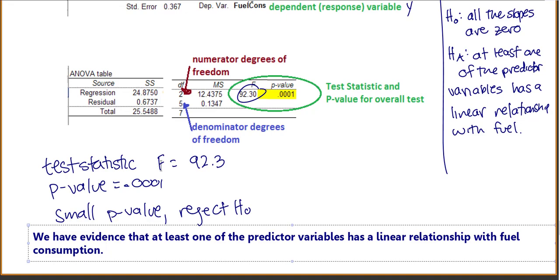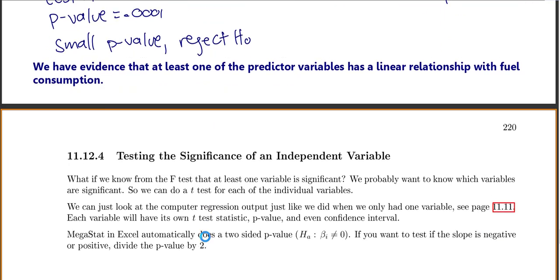Notice this doesn't tell me which variable has that linear relationship — for that, I have to go on and test the significance of just one variable. If we know from the F-test that at least one variable is significant, we probably want to know which variables are significant. We can do a t-test for each individual variable by looking at our computer regression output, just like we did when we only had one variable. Each variable will have its own t-test statistic, p-value, and confidence interval. Note that Excel automatically gives a two-sided p-value for the slope not equal to zero; if you want to test if the slope is negative or positive, just divide the p-value by 2.